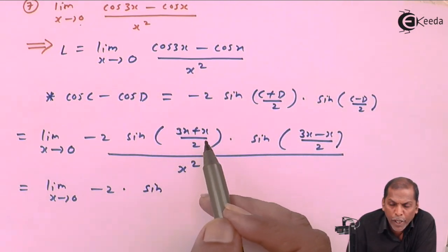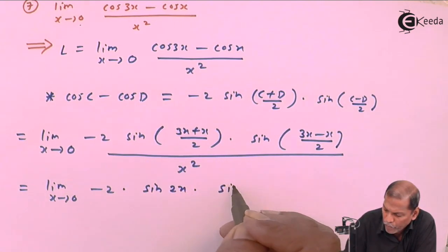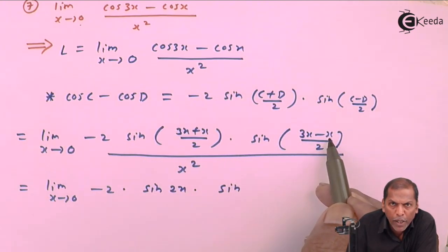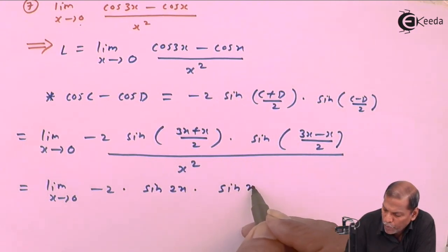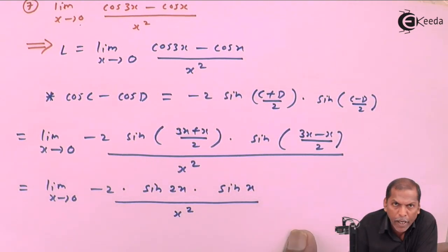is 4x divided by 2, so we get answer 2x. Then sine 3x minus x is 2x divided by 2, so we get x only, and then totally divided by x squared.